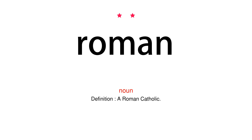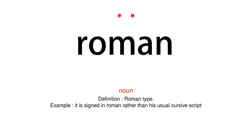Noun. Definition: A Roman Catholic. Noun. Definition: Roman type. Example: It is signed in Roman rather than his usual cursive script.